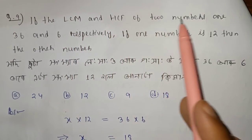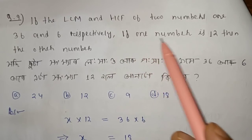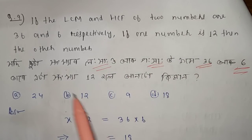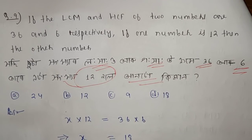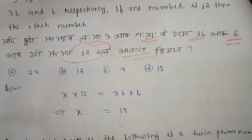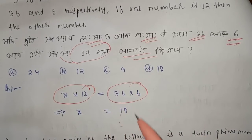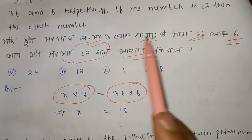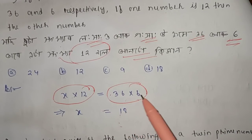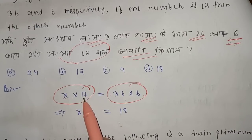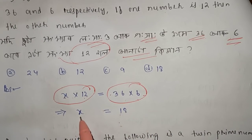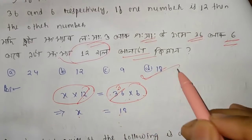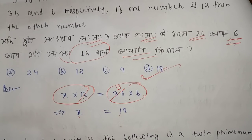If the LCM and HCF of two numbers are 36 and 6 respectively, and one number is 12, find the other number. Using LCM times HCF equals product of the two numbers: 36 times 6 equals 12 times the other number. The other number is 18.